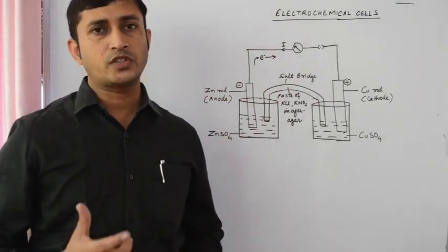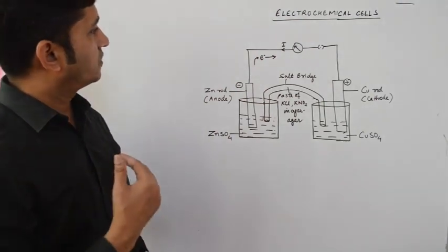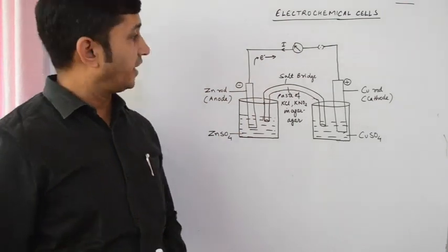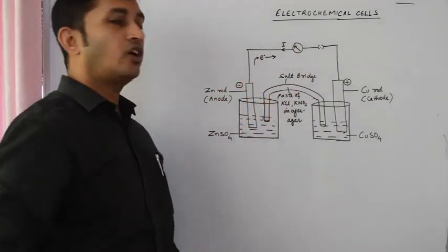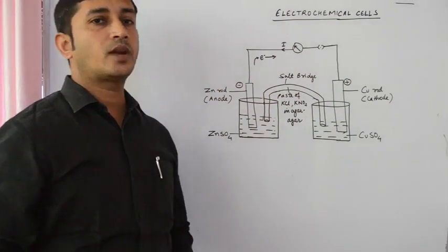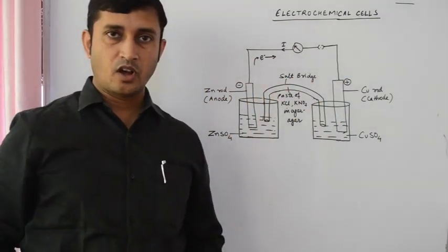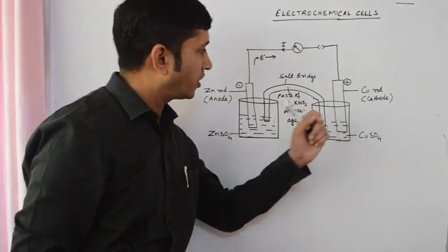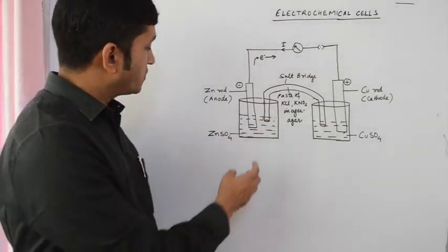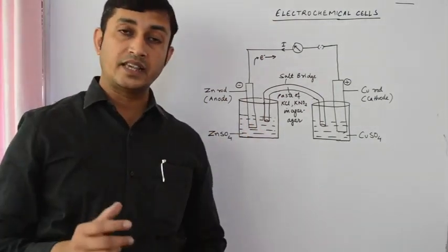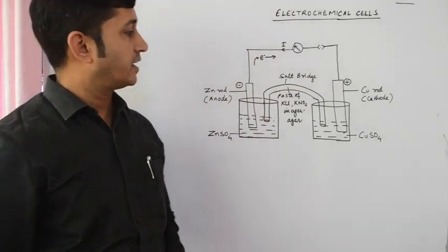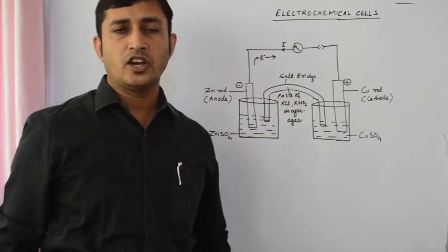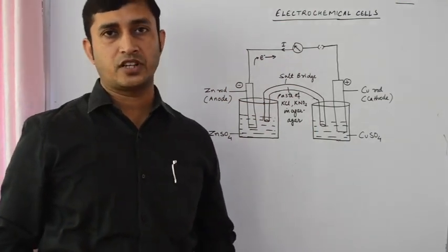On setting up this electrochemical cell, we will record the following observations. First, the galvanometer will show deflection towards the left side, meaning current is flowing from the copper rod to the zinc rod, or electrons are moving from the zinc rod to the copper rod. Also, the zinc rod will lose its weight and the copper rod will gain its weight. The concentration of zinc ions in the zinc sulfate solution will increase, and the concentration of copper ions in the copper sulfate solution will decrease.